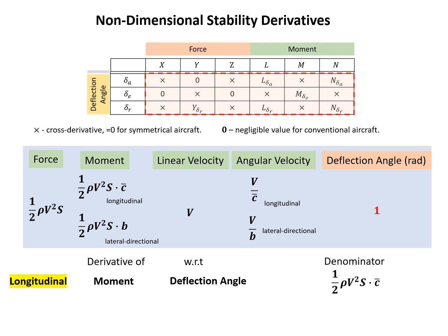For example, in the longitudinal direction, the derivative of moment with respect to deflection angle uses the same denominator as for moment, since the deflection angle has a dimension of 1. Similarly, for lateral-directional derivatives of moment with respect to deflection angle, we just replace the characteristic length with b.